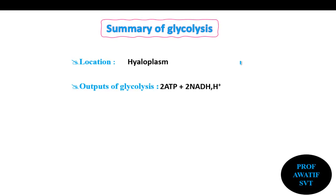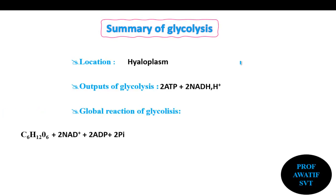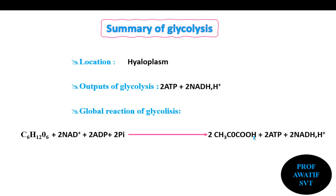For the global reaction of glycolysis: we use one glucose molecule, 2 NAD+, and 2 ADP plus 2 phosphates to get two pyruvate molecules (CH3-CO-COOH), 2 ATP from 2 ADP plus 2 phosphates, and 2 NADH from 2 NAD+. Note that in the global reaction we did not explicitly mention all protons and electrons. In the next video we will see what becomes of pyruvate and how we get the energy still stored in it.